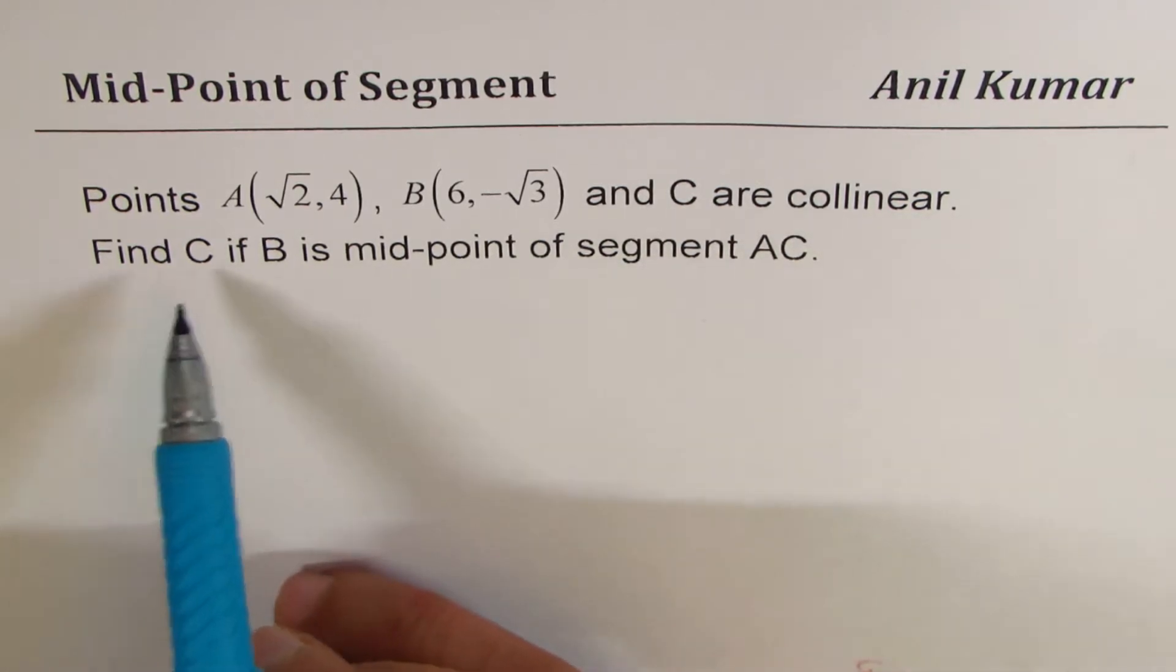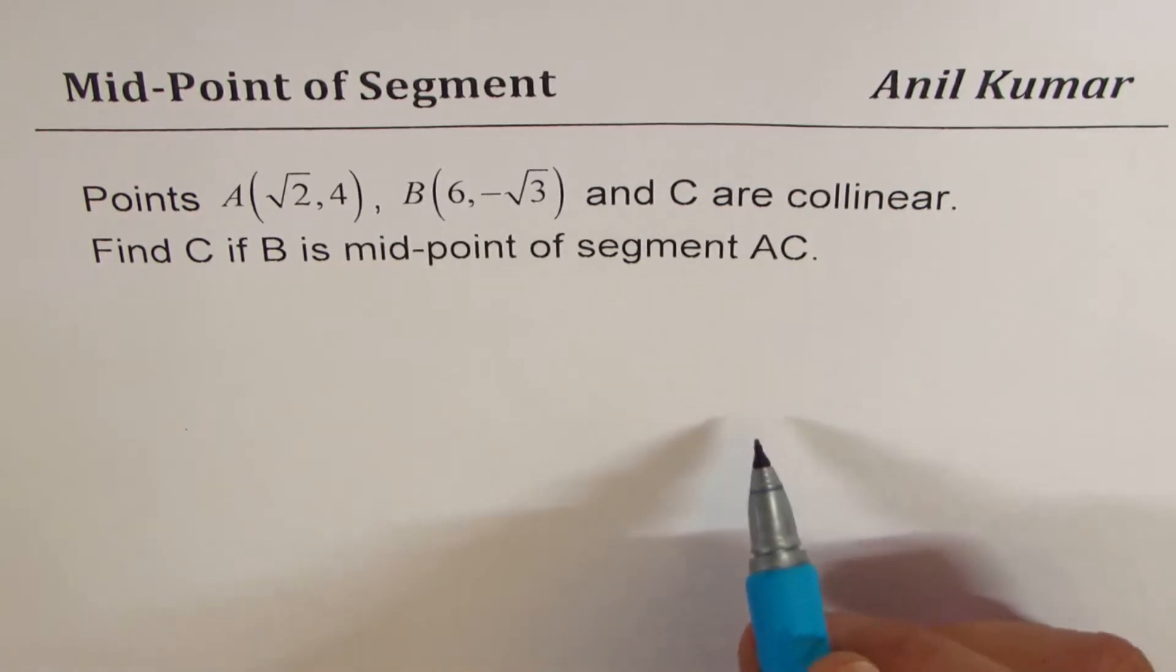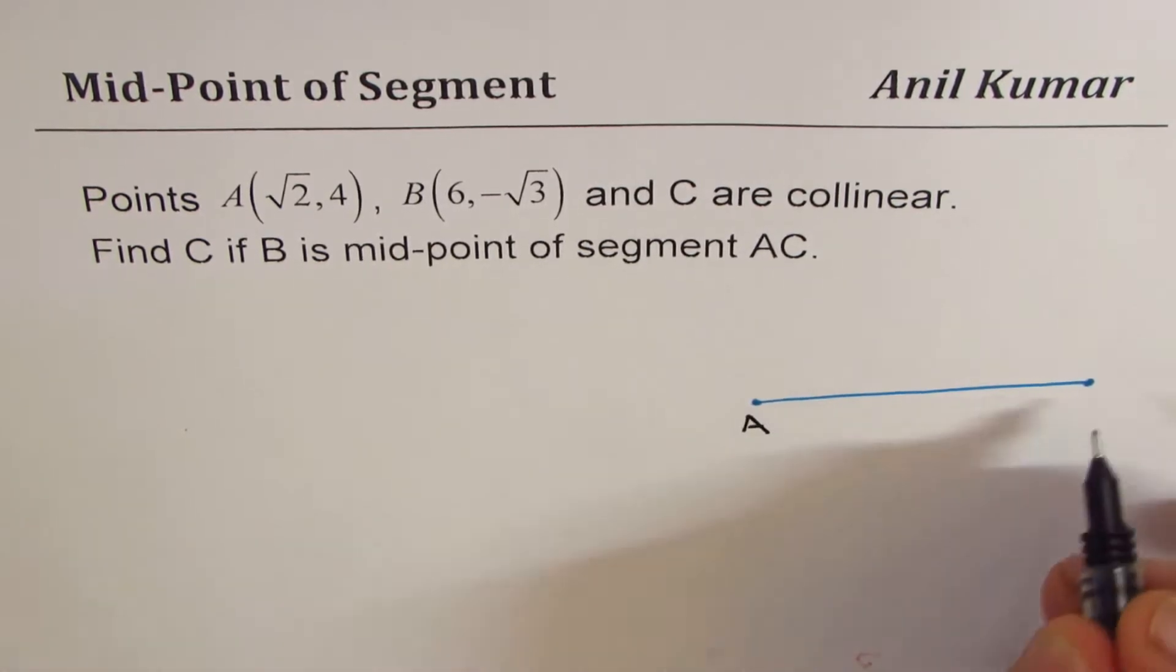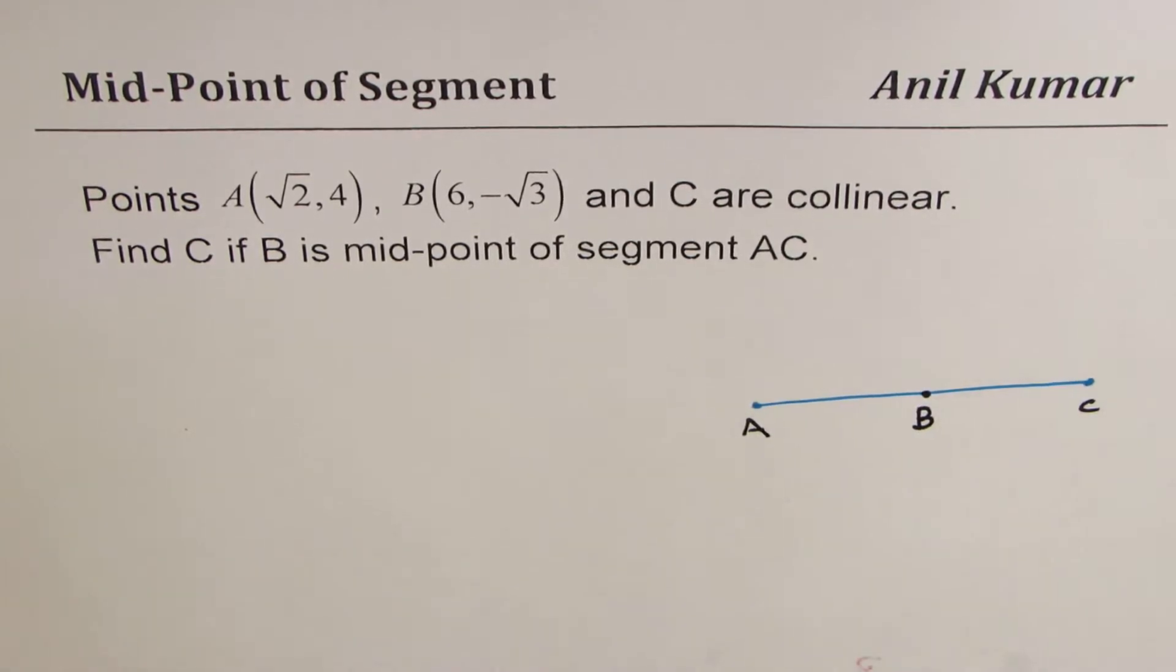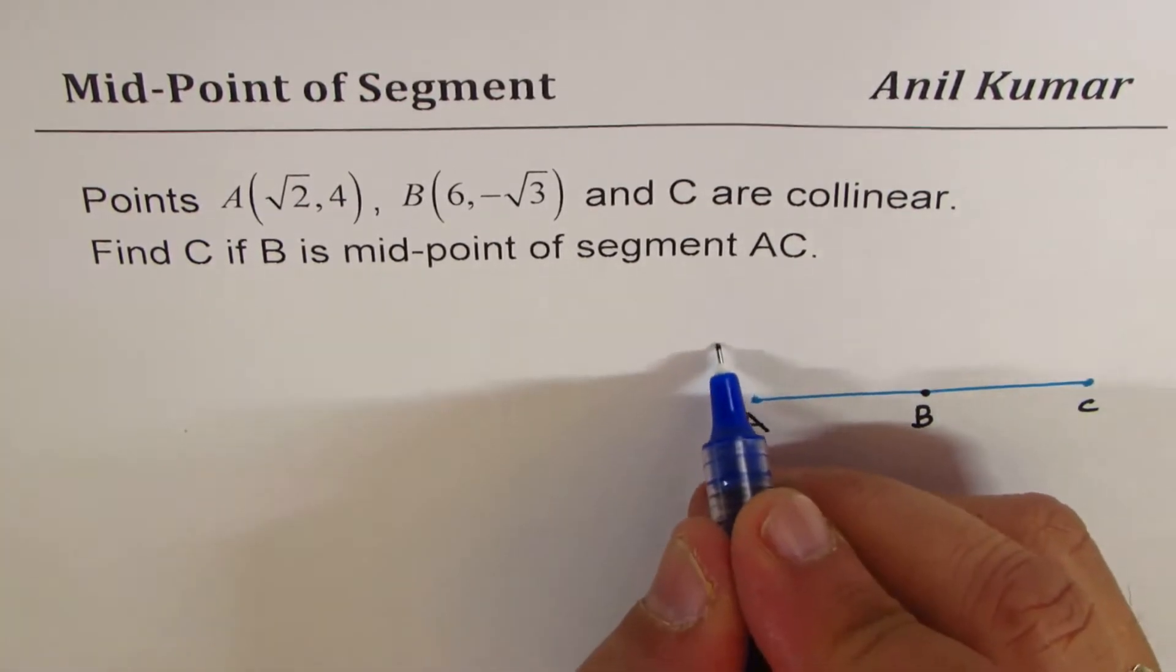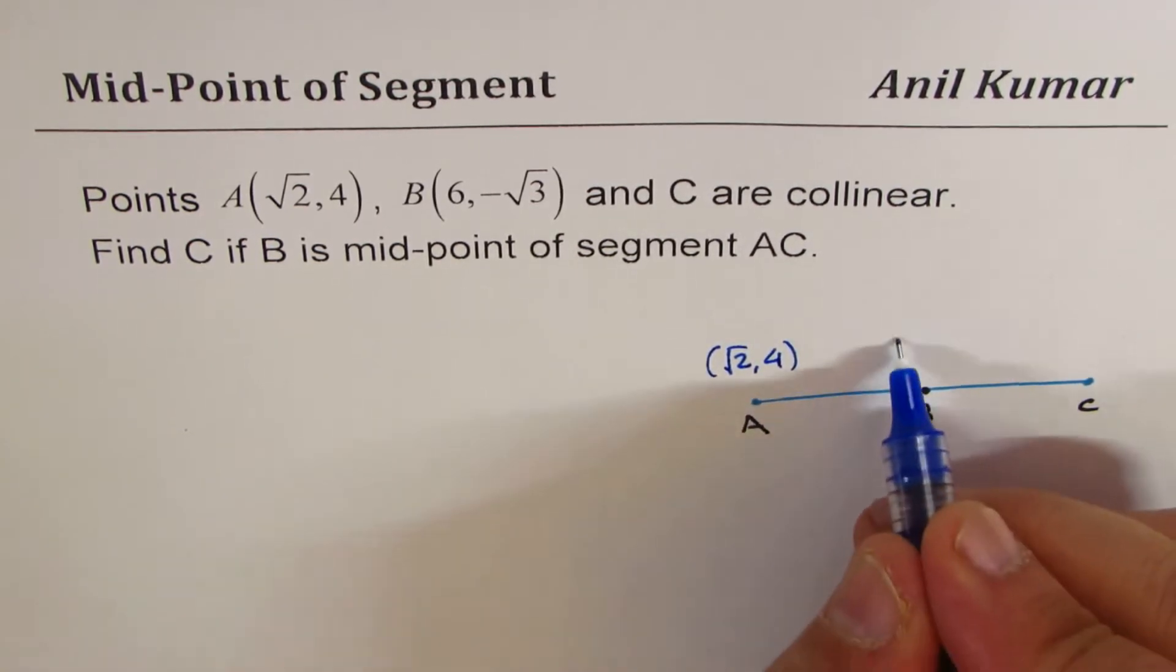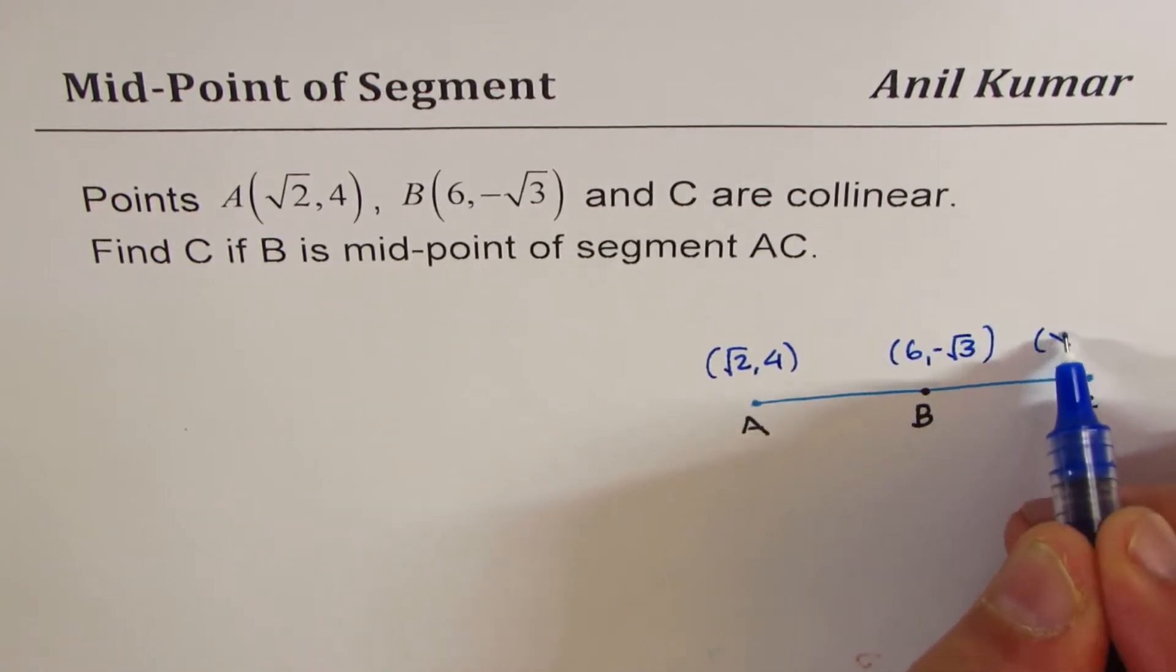Let me sketch the scenario. We have a line segment AC, and we are given coordinates of the midpoint which is B. We need to find the coordinates of point C. The points given to us are: for A it is (√2, 4), for B it is (6, -√3), and we don't know what are the coordinates for C, so I'll put (x, y).